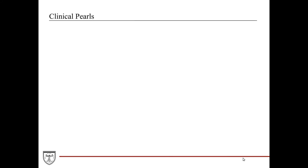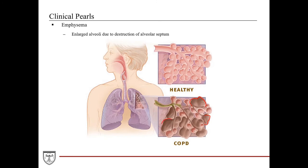Let's look at some clinical pearls of the respiratory system. Emphysema is characterized by enlargement of the alveoli because the alveolar septa between them have been destroyed by environmental toxins or chronic cigarette smoke exposure. Emphysema is a chronic obstructive pulmonary disease. Patients develop shortness of breath, hypoxia requiring supplementary oxygen, and in severe cases a barrel-chested phenotype, with difficulty exhaling air that stagnates within the enlarged alveoli.